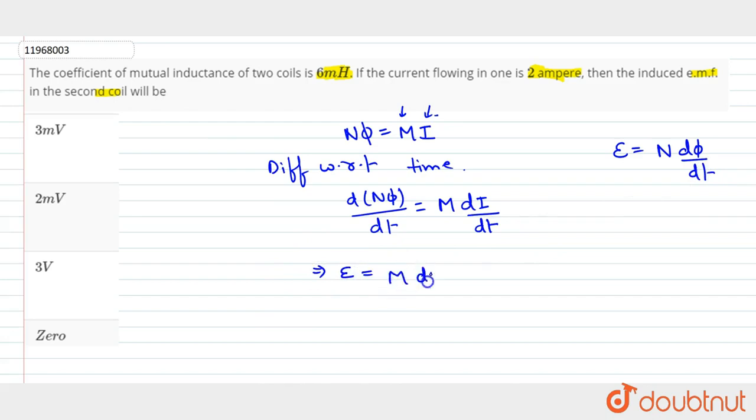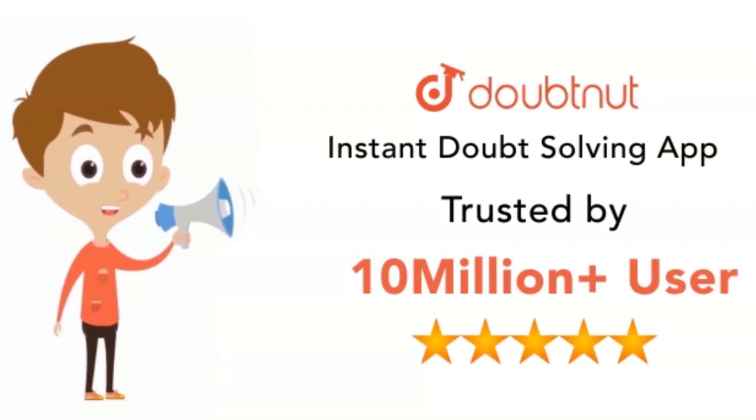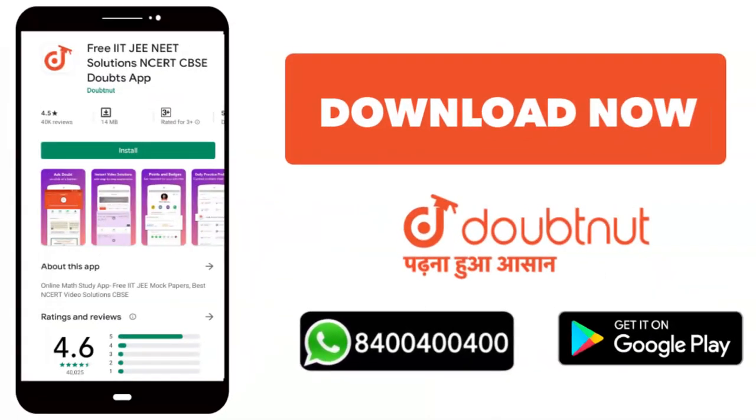This equation left hand side, what happens to me, induced EMF is equal to M times di by dt. This means that if my current changes with respect to time, then my induced EMF will be produced. But what happens here, the current flowing in one is only 2 ampere. With respect to time there is no change. My current is not changing with respect to time, which means that di/dt equals M into 0. So what happens, induced EMF is equal to 0 if the current is not changing with respect to time. So my induced EMF is equal to 0.